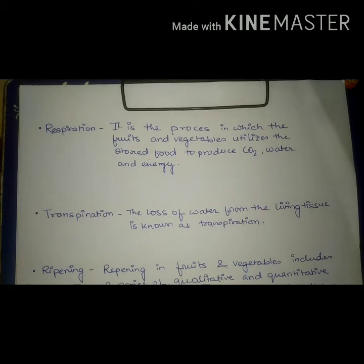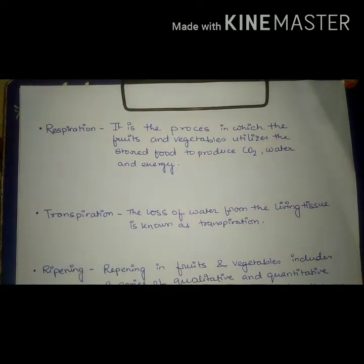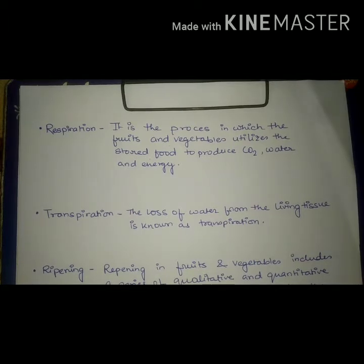The first term is respiration. Do fruits and vegetables breathe? Yes, they do breathe. They take in oxygen and give out carbon dioxide. By definition, respiration is a process in which fruits and vegetables utilize the stored food to produce carbon dioxide, water, and energy. The energy helps to carry out the other life processes of the fruits and vegetables.